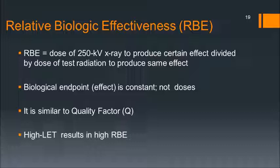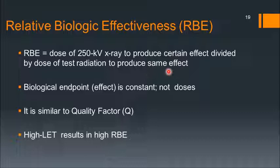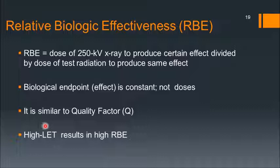We will now look at relative biological effectiveness, otherwise called RBE. RBE is equal to the dose of 250 kV x-rays to produce a certain biological effect divided by the dose of the test radiation to produce the same effect. RBE is the biological effectiveness of a particular type of radiation with 250 kV x-rays as the reference. The biological endpoint is constant; the dose is not. RBE is something very similar to the quality factor we learned in radiation safety.